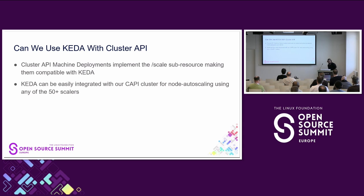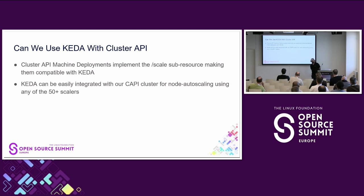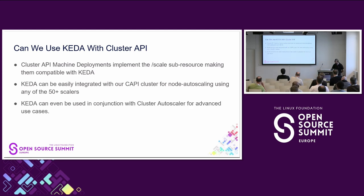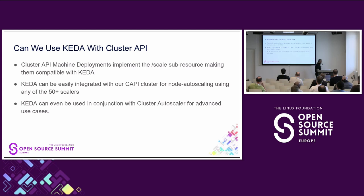KEDA can be integrated with CAPI clusters for node autoscaling at the machine deployment level. Many of the 50-plus scalers apply — typically Prometheus metrics or APM data rather than Kafka. KEDA can even be used in conjunction with Cluster Autoscaler for advanced use cases — it's not either/or — as long as you configure things so they don't step on each other's toes.